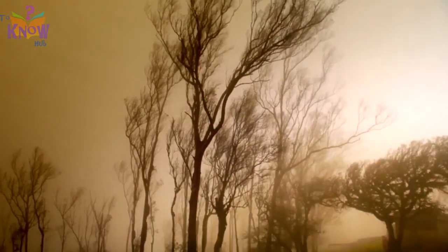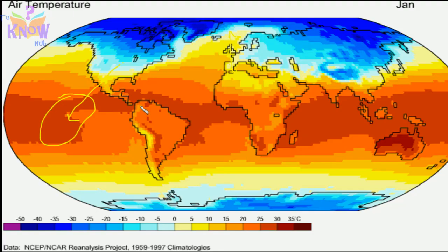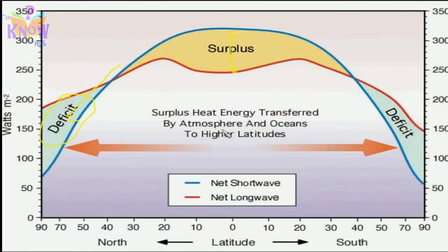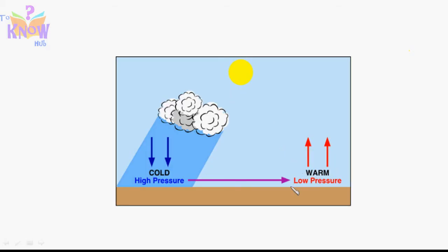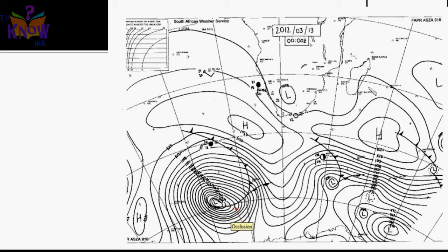Welcome to episode number two. In our previous episode we learned how solar radiation reaches earth. We all know it creates wind, but how does it create wind? The normal conception is that in the hotter region air becomes warm and goes up, and rising of the air leaves a vacuum space. Because of that, the air pressure drops there, and air from surrounding areas where the air pressure is higher rushes toward the low pressure area. But this is incomplete.